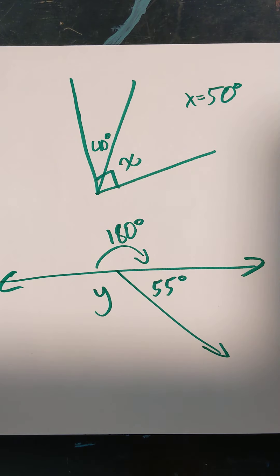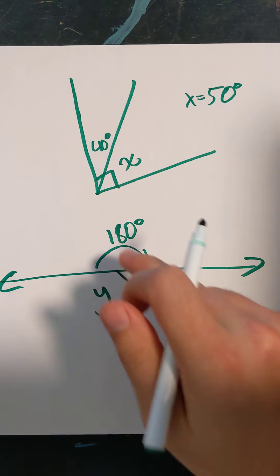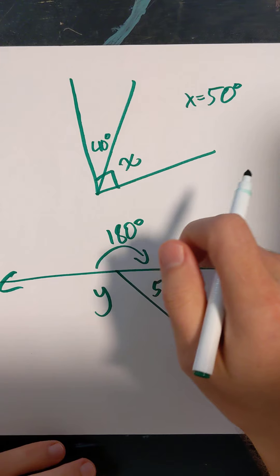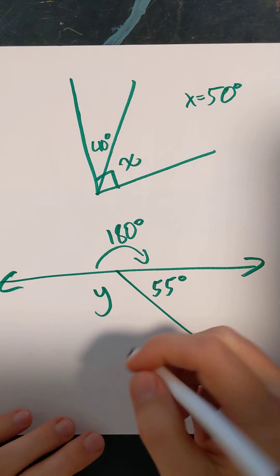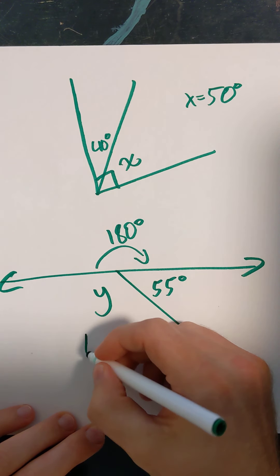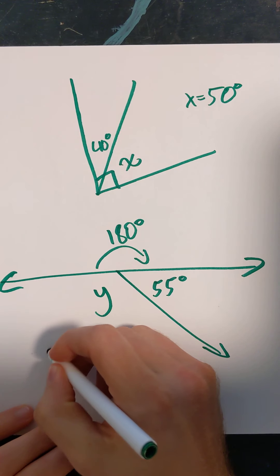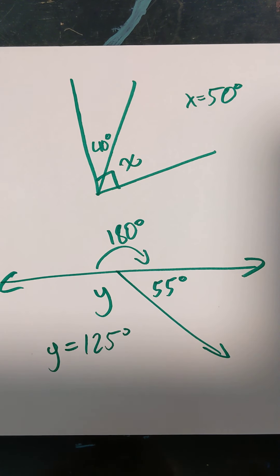Well, Y is going to be whatever we need to add to 150 to get to 180, or we can take 180 and subtract 55. So that's going to be 125 degrees. That's our Y value.